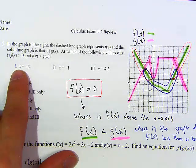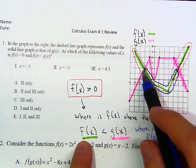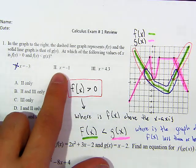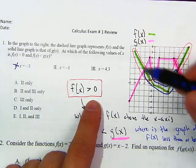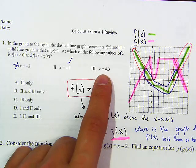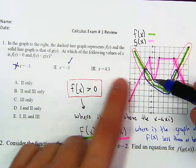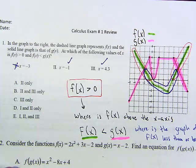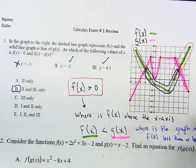Looking at the answer choices: at x = -3, the green is not below the pink, so that's wrong. At x = -1, the green is below the pink and f(x) is greater than zero, so that's correct. At x = 4.3, it's above zero and below the pink line, also correct. So our answer is choices two and three — that's letter B.